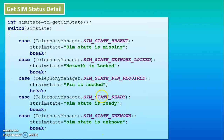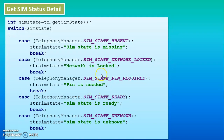For SIM state, again take an integer variable because all these variables return integer values. If SIM state is SIM_STATE_ABSENT, write the message 'SIM is missing'. If it is SIM_STATE_NETWORK_LOCKED, write 'network is locked'. If it is SIM_STATE_PIN_REQUIRED, write 'PIN is needed'. Then there are SIM_STATE_READY and SIM_STATE_UNKNOWN. Use a string variable to return these messages.